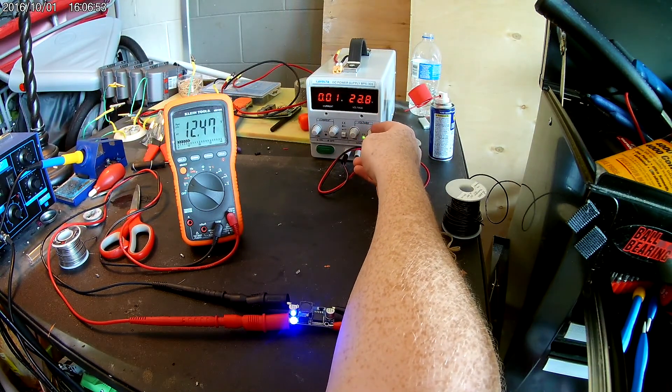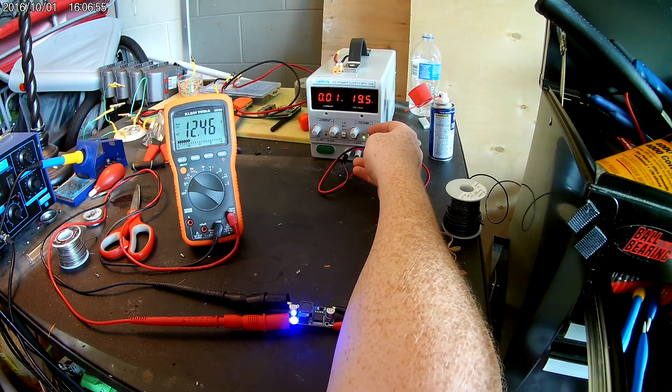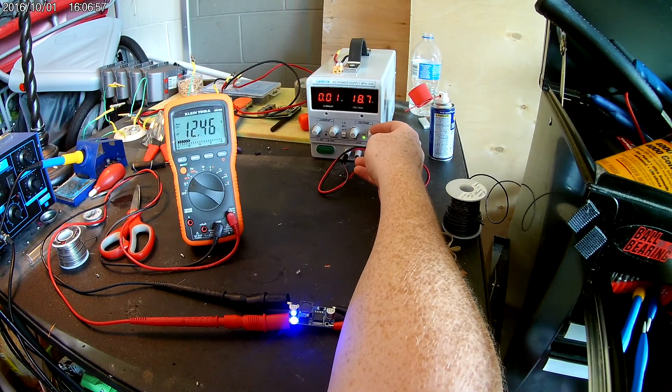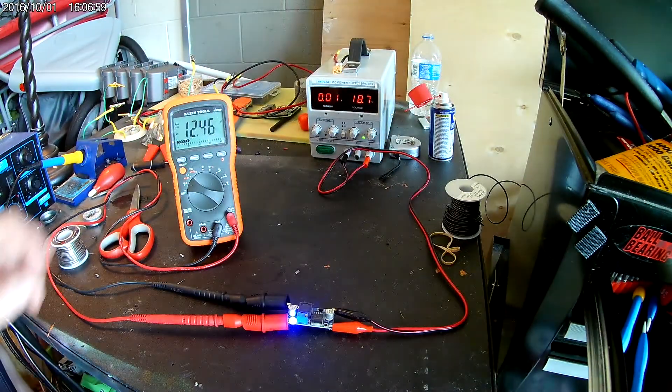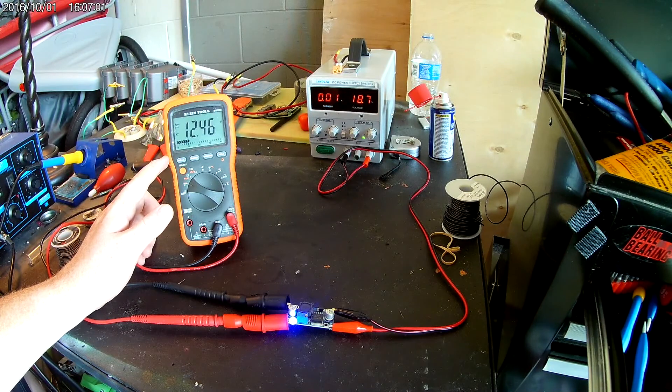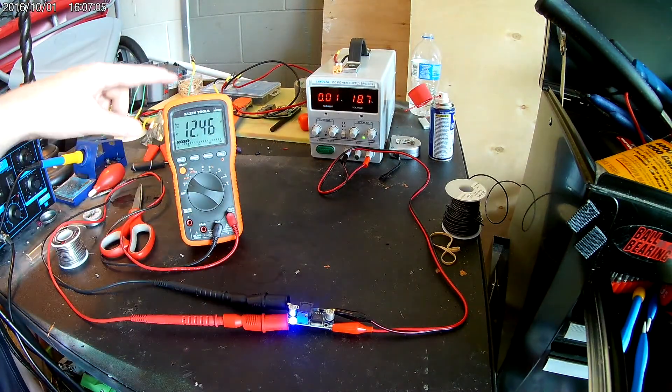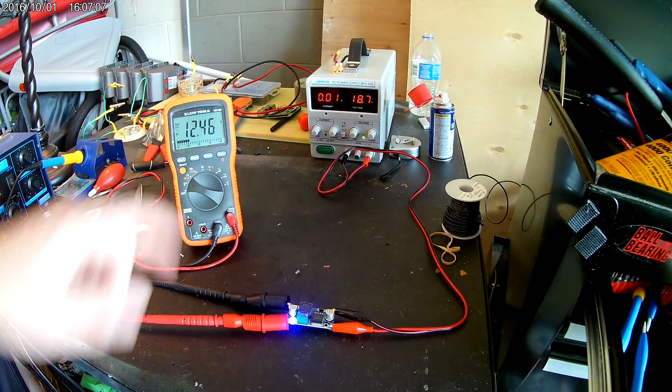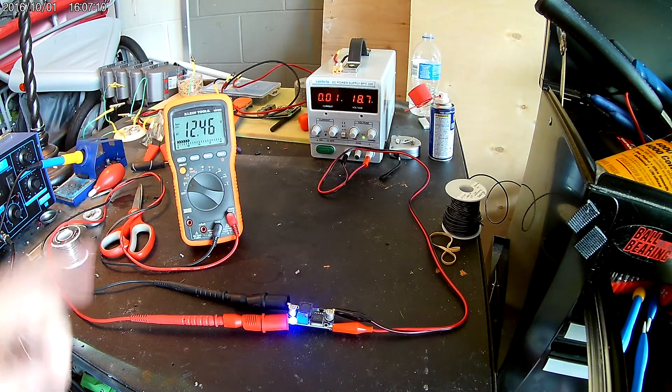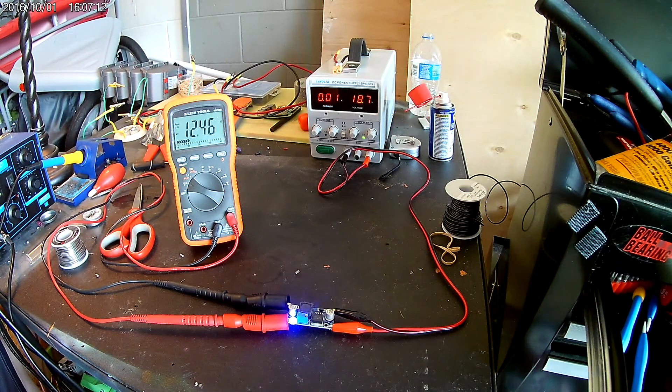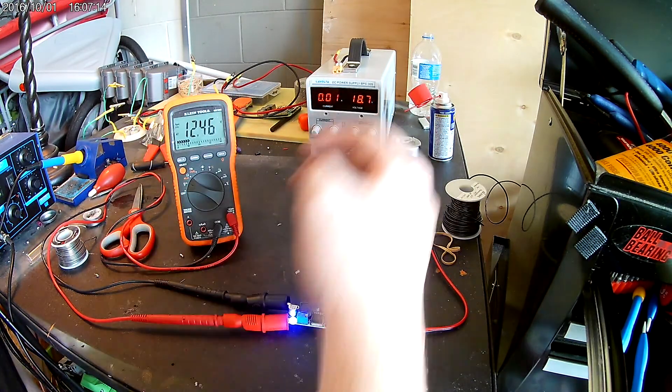So I'm going to go ahead and turn it down. And it's staying constant at 12.46. Now this will stay the same as long as it's 2 volts above your output. So if I'm 14.46, it should stay at 12 volts, 12.46 output. Let's go ahead and test that.